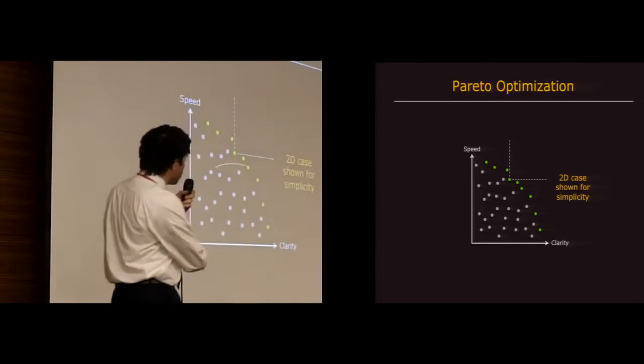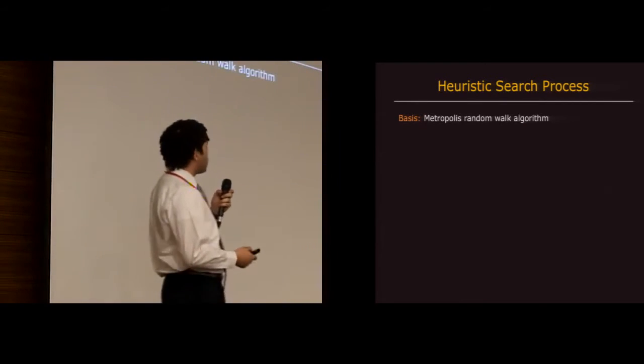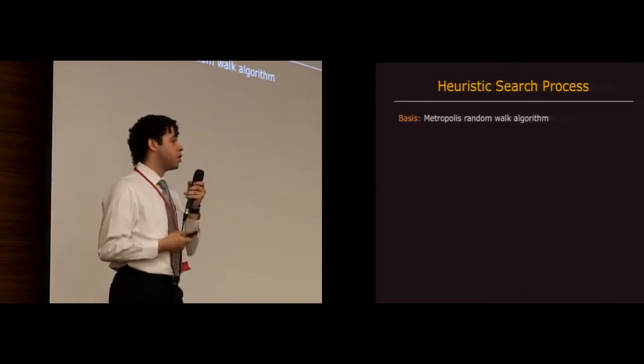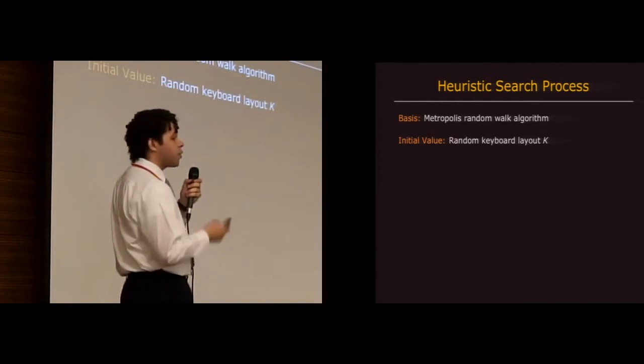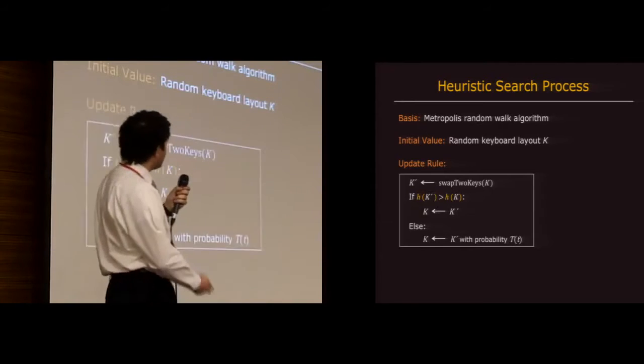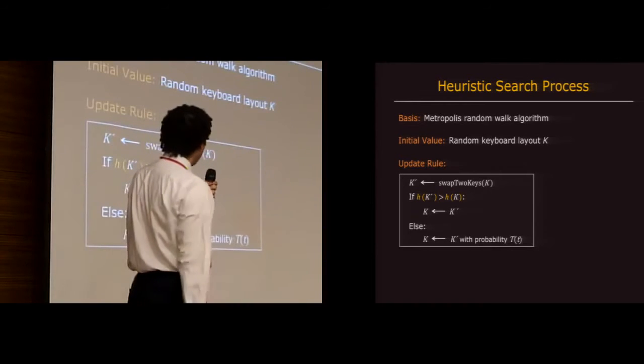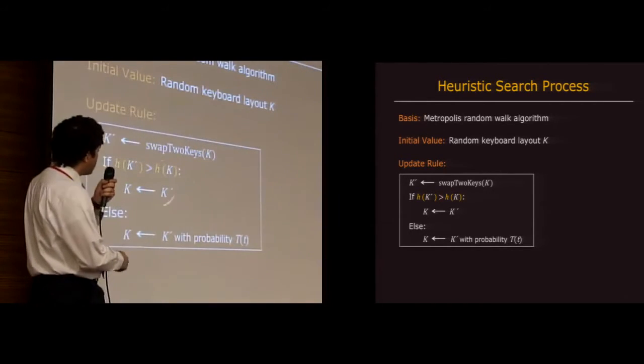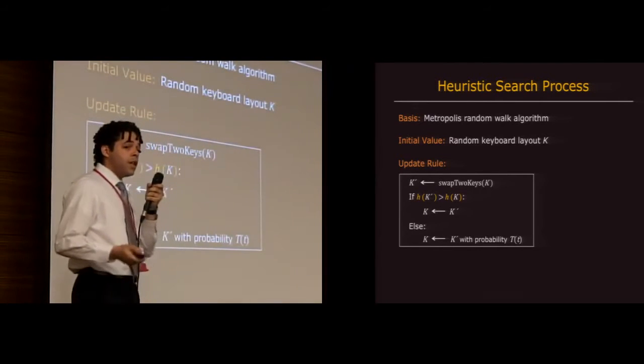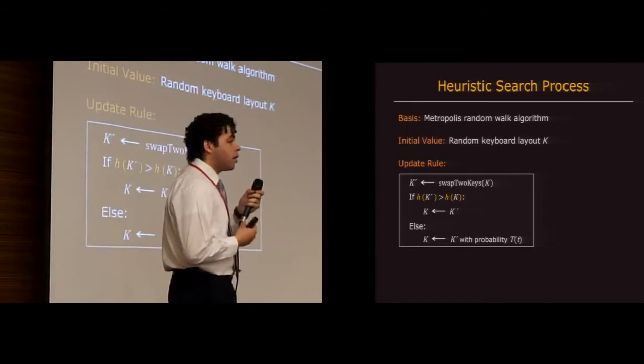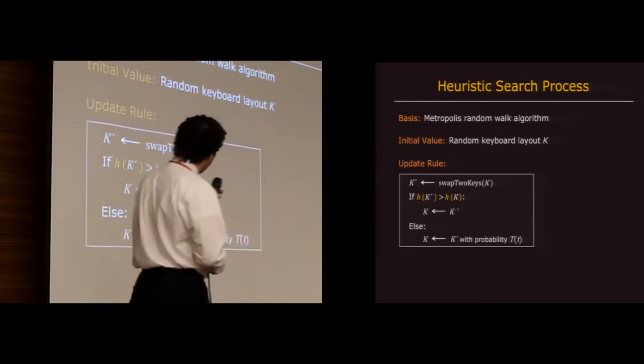So how do we actually discover all of these layouts? We used a heuristic search based on the Metropolis random walk algorithm. However, we feel that you could probably use any type of search, including a genetic algorithm to do the same. It would work just fine. Essentially, we start with a random keyboard layout. Again, I'm going to call it K. And we do the following iterative scheme. We swap 2 keys on K, so we're using the same footprint as QWERTY, to get a new layout K-prime. And if K-prime is better than K with respect to some heuristic, we keep it. Otherwise, we'll only keep it with some user-controlled temperature. That gives us simulated annealing so that we can escape local extrema, local maxima, and move on to global maxima.